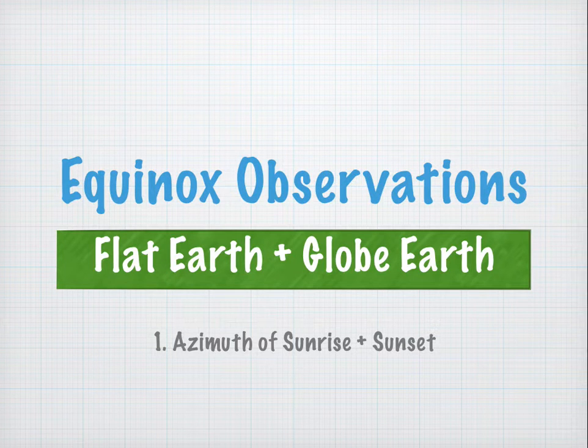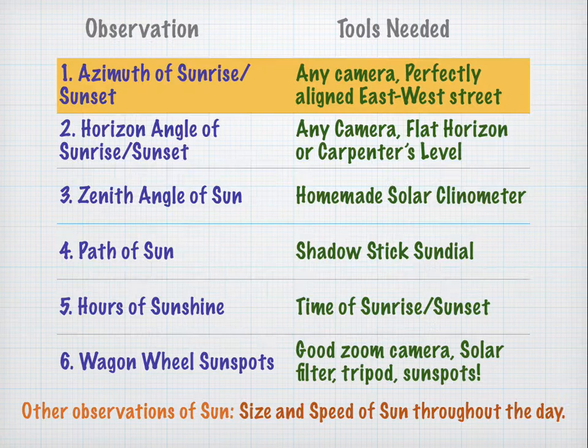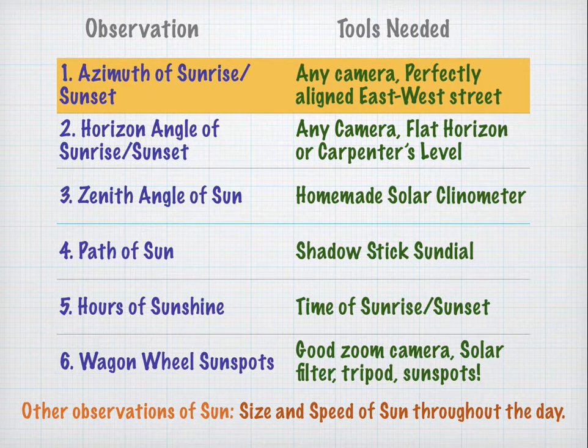Equinox Observations: Flat Earth and Globe Earth. Part 1 — Azimuth of Sunrise and Sunset. This is the first video of our six-video series.